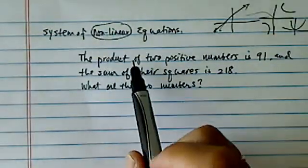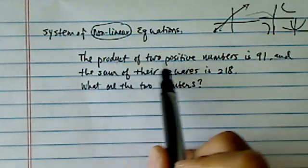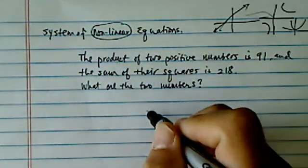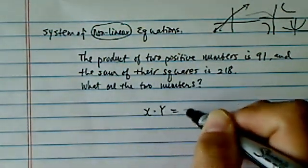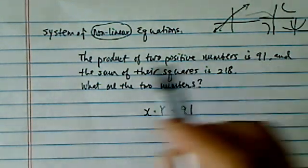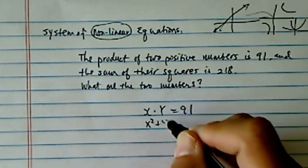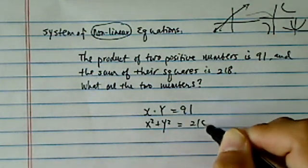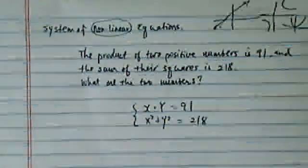Alright, so the system equation here we're looking for is the product of two numbers, x·y is equal to 91, that's sentence 1, and the sum of their squares is 218. We were asked to find those two numbers.